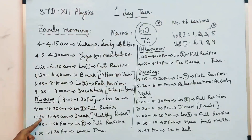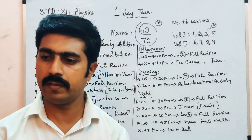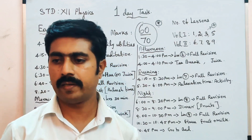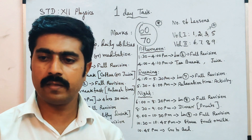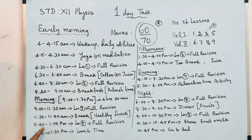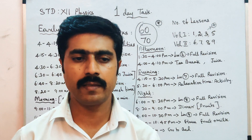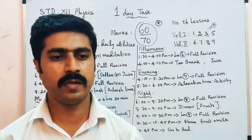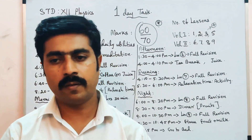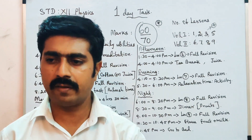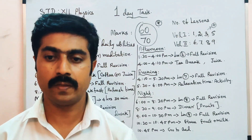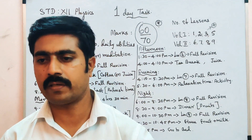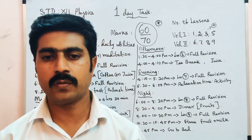Next, 11:30 to 11:40 — 10-minute break. Have a healthy drink: juice, pomegranate, apple. Then 11:40 to 1:00 PM — study the fifth lesson. You need to study 3 questions, 2 questions, 5 questions — covering 5 marks and 2-3 mark problems. The fifth lesson is limited, so study it 3 times.